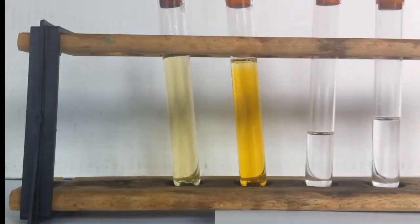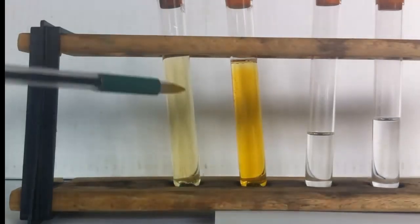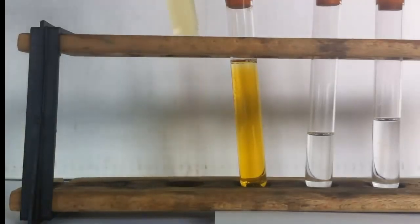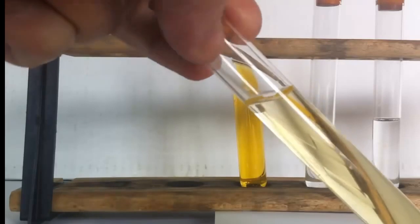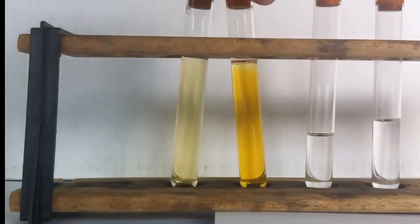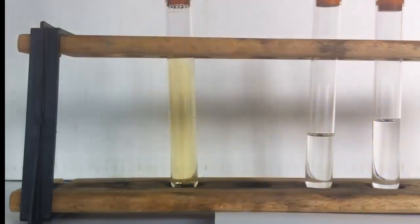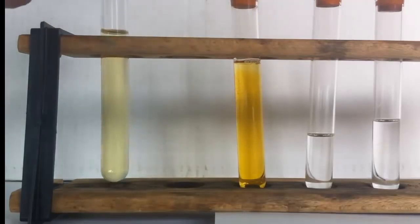Let's take a look at a test for unsaturation in hydrocarbons. On the left here in these two test tubes I have bromine water. You can see at low concentrations it appears more yellow than orange in color, and at higher concentrations bromine water appears orange as you see here. I'm going to use the darker solution so that it shows up better on camera.